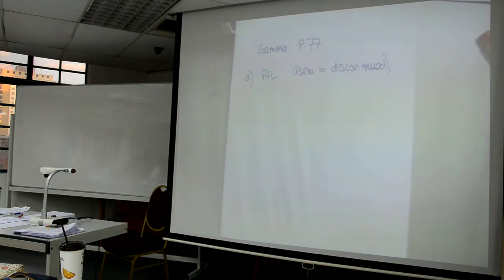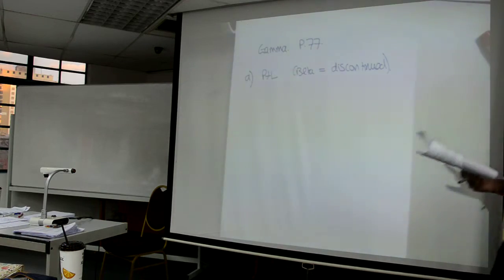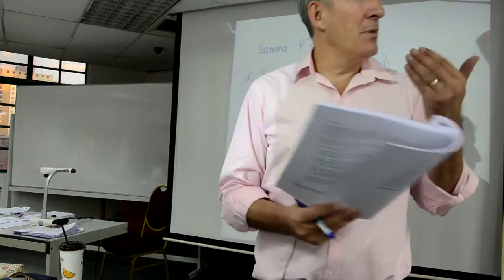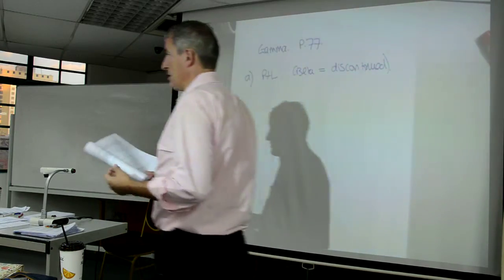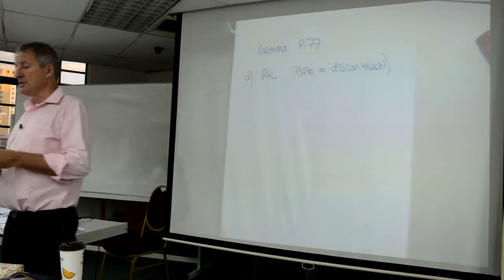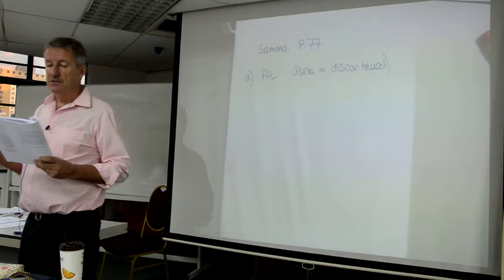However, halfway through the year, Beta business is sold, is disposed of, and is a discontinued operation. When we sell it, we make a loss of 76. When we sell it, there are costs of 37. At the same time, we reorganize the continuing business at a cost of 98.